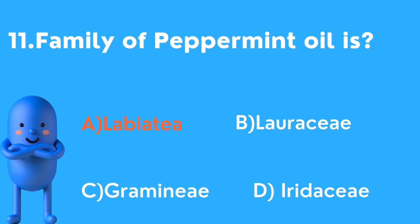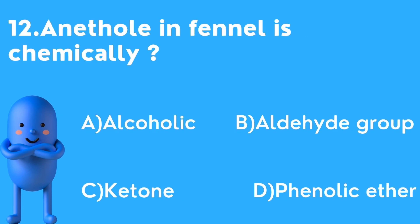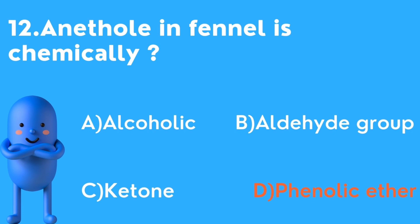Twelfth question: Anethole in phenol is chemically — options are A) Alcoholic, B) Aldehyde, C) Ketone, D) Phenolic ether. Anethole is a phenolic ether — that is the correct answer.